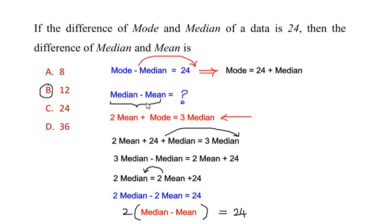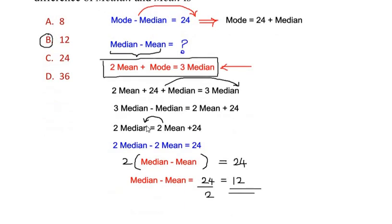So to solve this example we have made use of this formula which relates the mode, median and mean, and we have got rid of the mode because we did not want to find the mode. We needed only to find median and mean. So rearranging all the equations and substitutions, we got the expression in terms of median and mean and then we found it as 12.